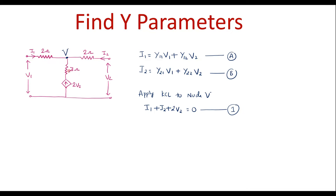In this circuit, there is a 3 ohm resistor which is in series with the current source. If a resistor is in series with a current source, that resistor has no value — it can be ignored. So this 3 ohm resistor will not come into the picture; we can ignore it. It is as good as a short circuit.